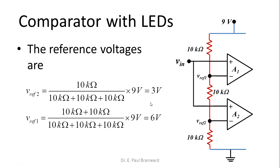Similarly, for reference voltage 1: there are 2 resistors from node VREF1 to ground. Therefore, VREF1 is (10kΩ + 10kΩ) divided by (10 + 10 + 10)kΩ, multiplied by 9 volts, which gives 6 volts. So VREF2 = 3V is fed to the inverting terminal of comparator A2, and VREF1 = 6V is fed to the inverting terminal of comparator A1.